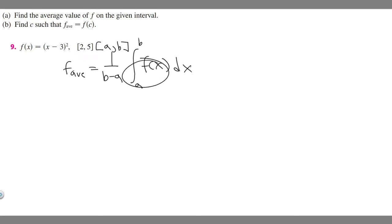So let's just go ahead and plug in and solve for this for a first. So it's going to be equal to 1 over b, which is 5, minus a, which is 2. So 5 minus 2 is 3. And then we multiply it by the integral from a to b, so the integral from 2 to 5 of f of x, which is x minus 3 squared dx.